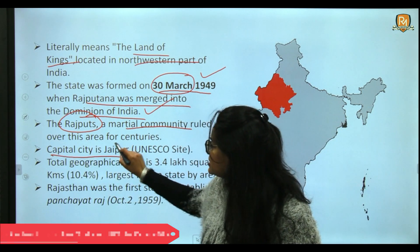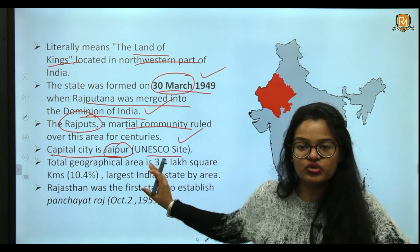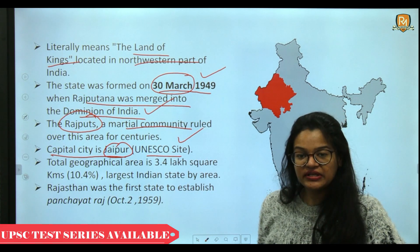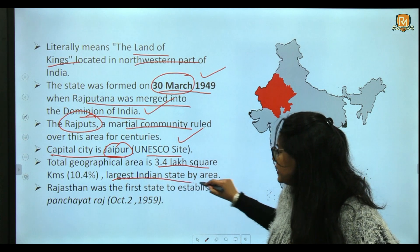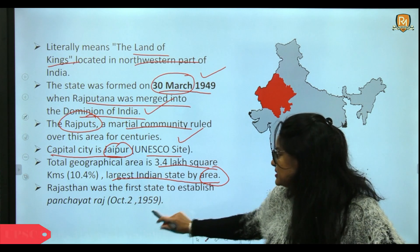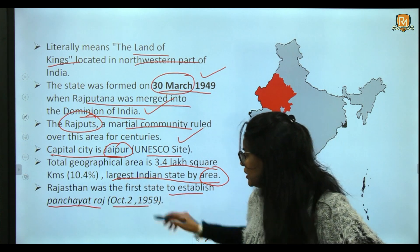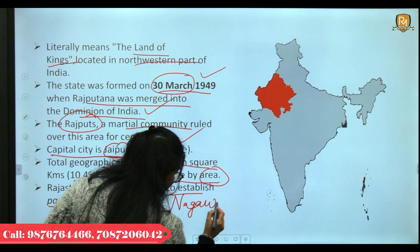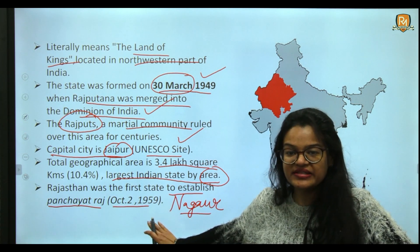The capital city of Rajasthan is Jaipur, which became a UNESCO World Heritage Site in 2019. Its total geographical area is 3.4 lakh square kilometres, making Rajasthan the largest Indian state by area. A very important fact: Rajasthan was the very first state to establish panchayati raj institutions, on 2nd October 1959, in Nagaur district.